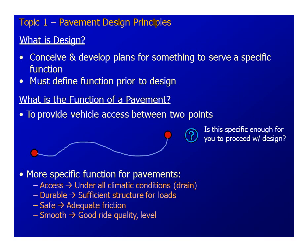The function of a pavement is not only accessibility — providing access between two points — but it should also provide functions such as access, durability, safety, and smoothness. Access means it should satisfy the two customers of the pavement: the first is the user, like the driver, and the second customer is the vehicle.